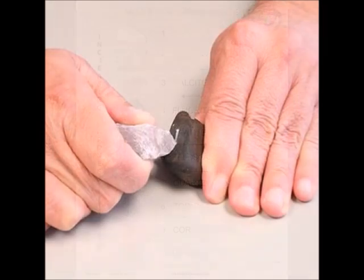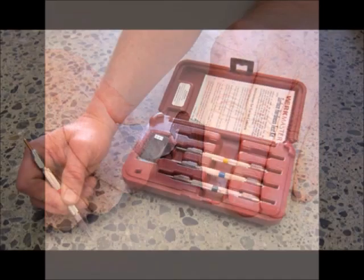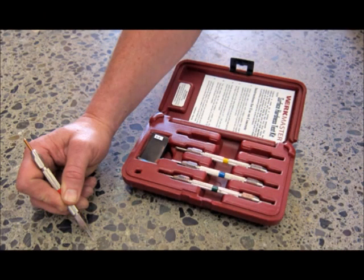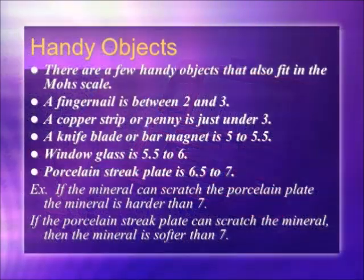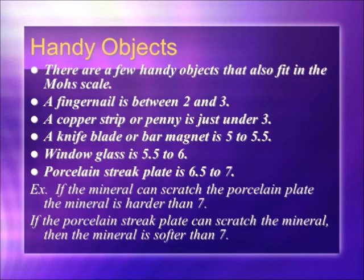The Mohs scale is based on the fact that a harder material will scratch a softer one. There is a kit that can be purchased to run such a test — the Mohs hardness test kit. There are also a few handy objects that can be used: a fingernail is between 2 and 3, a copper strip or penny is just under 3, a knife blade or bar magnet is 5 to 5.5, window glass is 5.5 to 6, and a porcelain straight plate is 6.5 to 7.